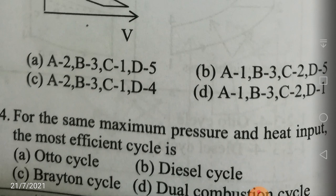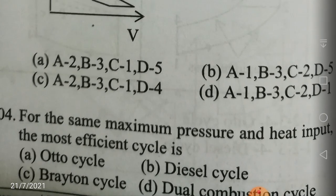Next question: for the same maximum pressure and heat input, the most efficient cycle is which one? As I was telling you in earlier videos — except when the compression ratio is involved — for all other types of parameters like heat added, maximum pressure, heat input, and work output, the Diesel cycle is the highest efficiency cycle, then the Dual cycle, then the Otto cycle. So for maximum pressure and heat input, the most efficient cycle is the Diesel cycle. That is the answer — option B.